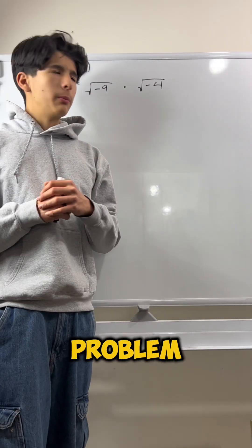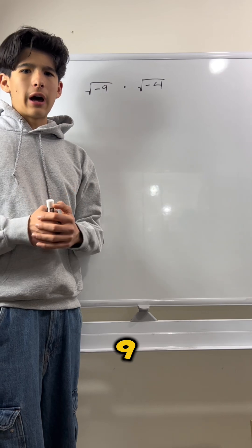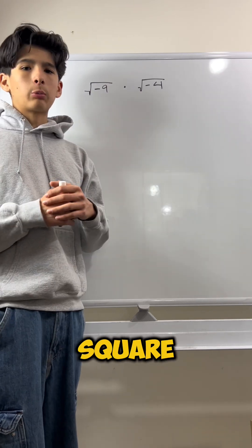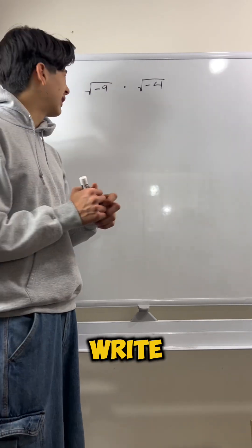So, let's break this problem down a little bit. Now, what is the square root of negative 9? Well, we could rewrite it as the square root of negative 1 times the square root of 9. Let's rewrite it like that.